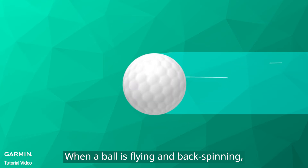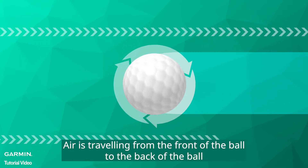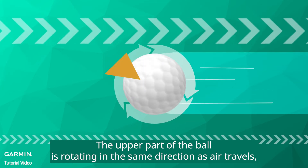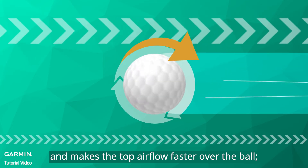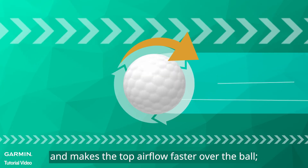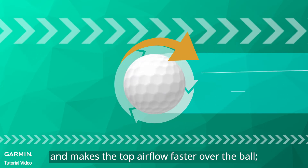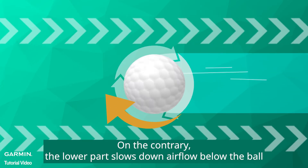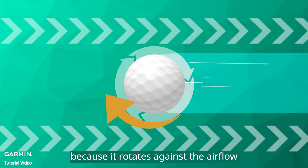When the ball is flying with backspin, air is traveling from the front of the ball to the back of the ball. The upper part of the ball is rotating in the same direction as the air travels, making the top airflow faster over the ball. On the contrary, the lower part slows down airflow below the ball because it rotates against the airflow.